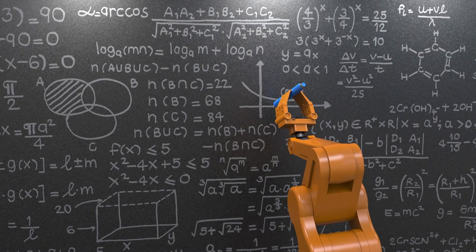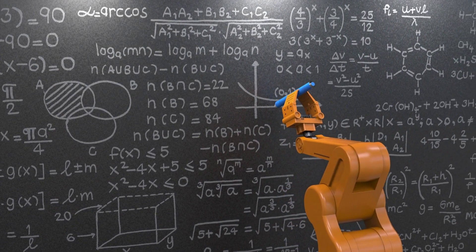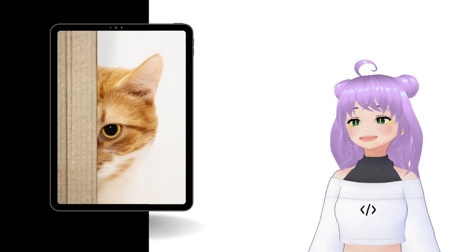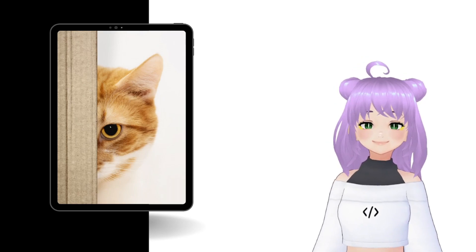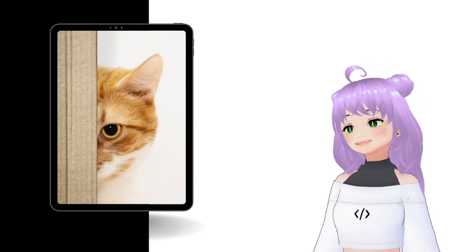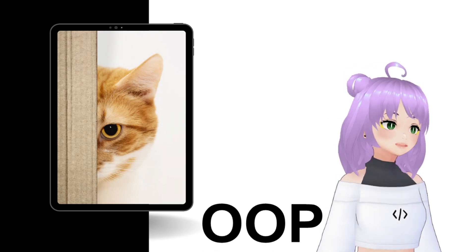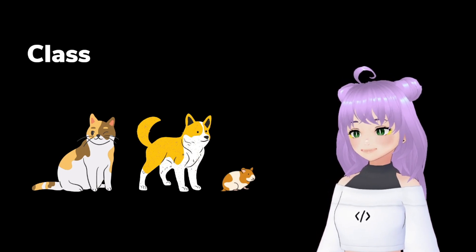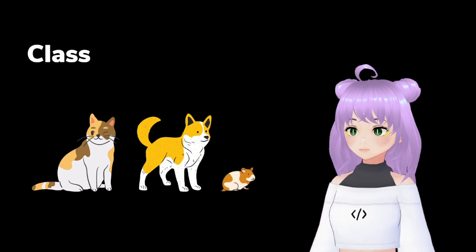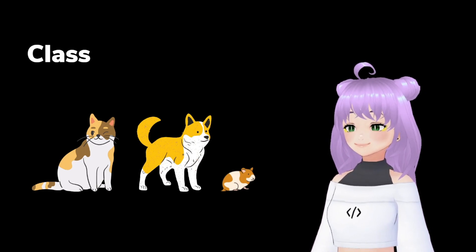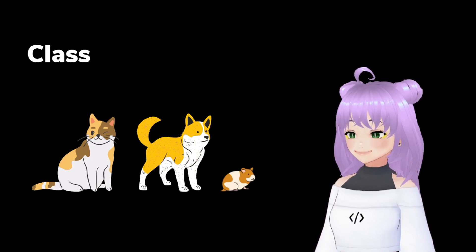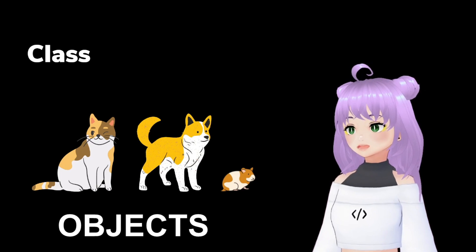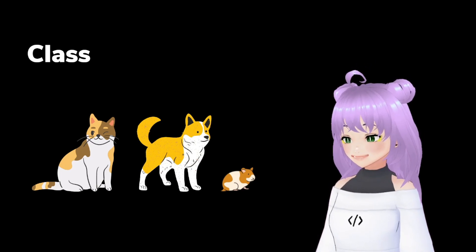However, in order to do this, we first have to explain and describe to our computer what a cat is, and because of this, we will learn about how to use object-oriented programming with Python. With this approach, we will be able to explain to our machine what a cat is using classes. A class is just like a template where you can create new objects or new different types of cats in this example.